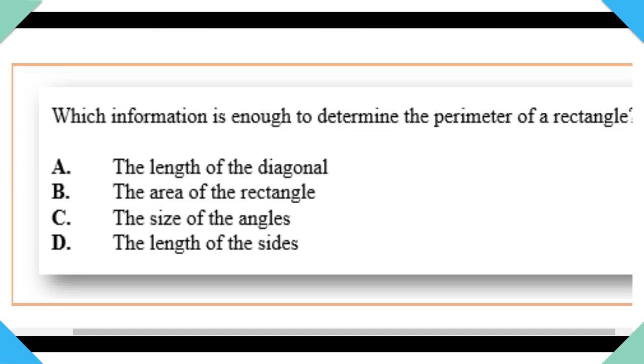Item 11. Which information is enough to determine the perimeter of a rectangle? Let's look at our options. A, the length of the diagonal. B, the area of the rectangle. C, the size of the angles. D, the length of the sides. Right away, I see the answer. The answer is the length of the sides, D. This question is testing your knowledge on how to determine the perimeter of polygons. Let me see how best I can help you to see why it could not be the other three options.